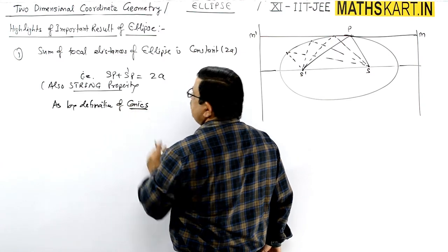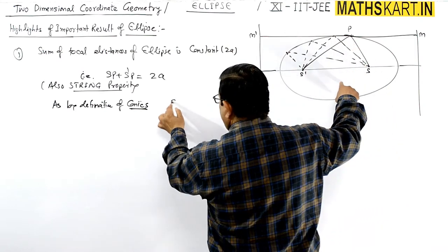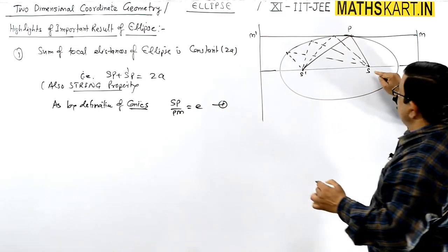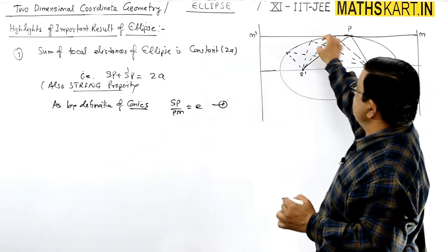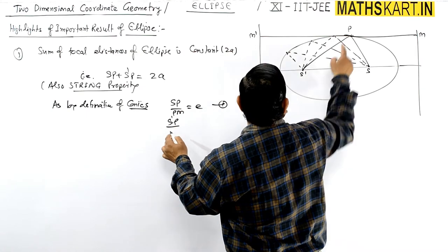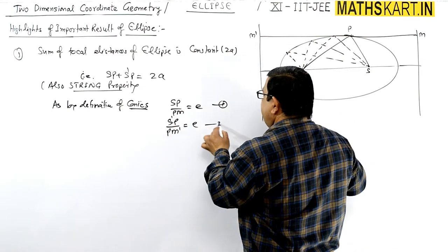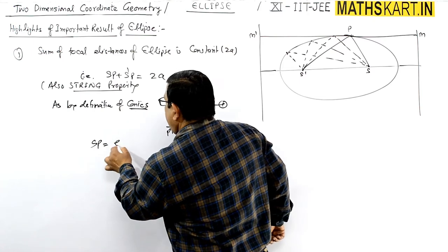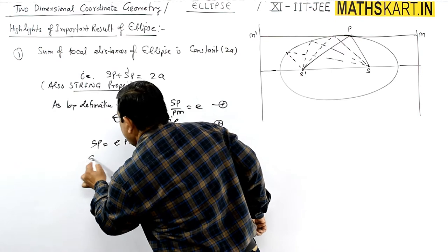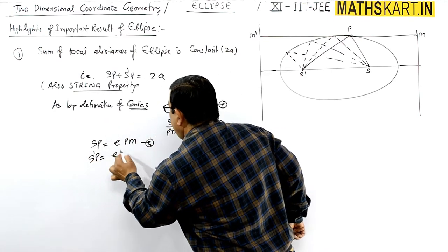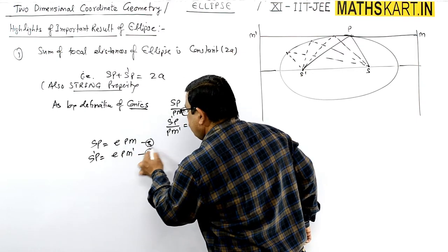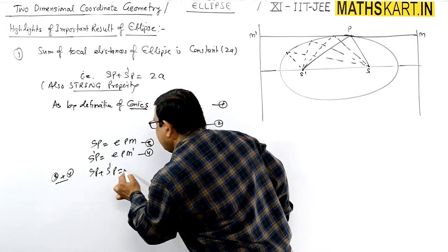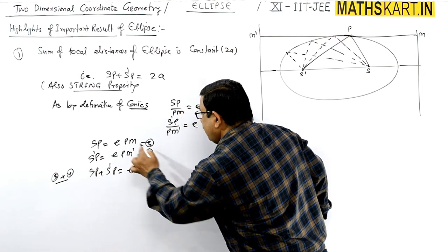By the definition of conics: SP/PM = e (eccentricity), and similarly S'P/PM' = e for the same ellipse. So SP = e·PM (equation 3) and S'P = e·PM' (equation 4). Adding equations 3 and 4: SP + S'P = e × (PM + PM').